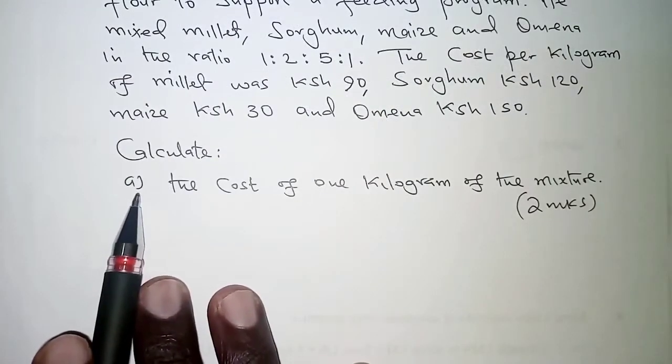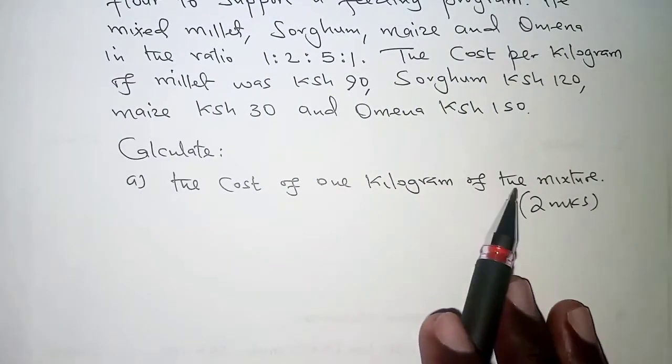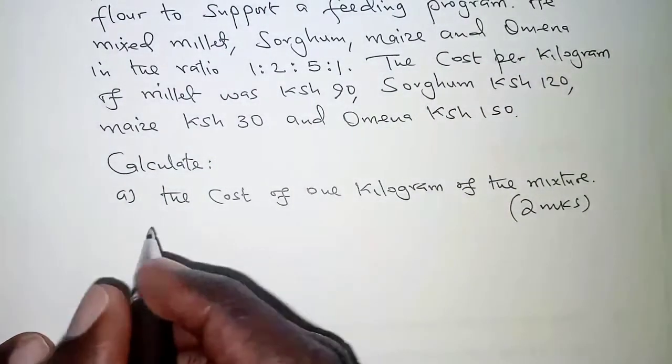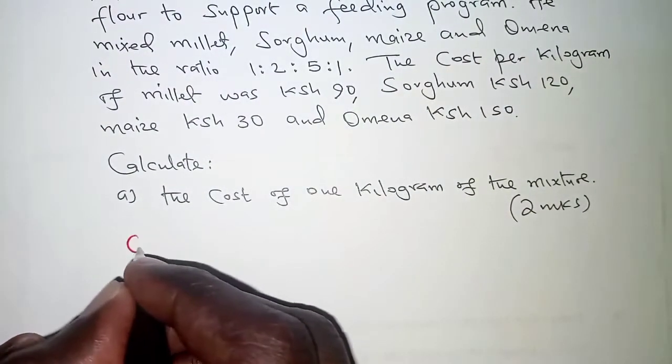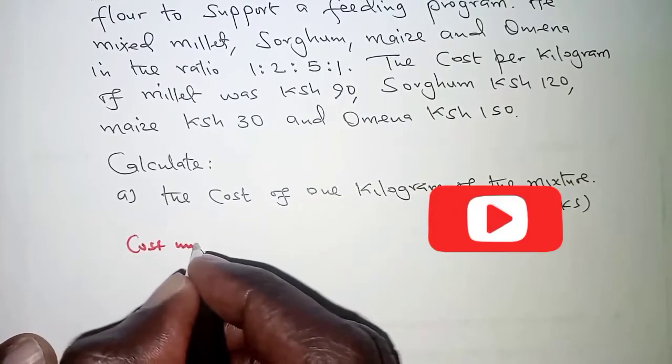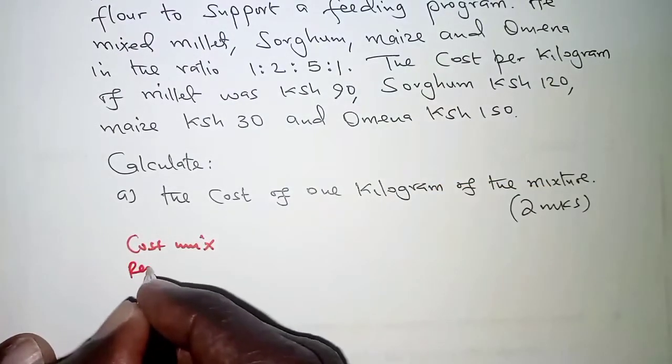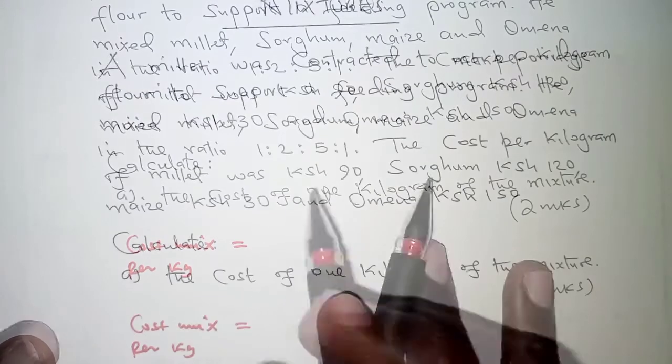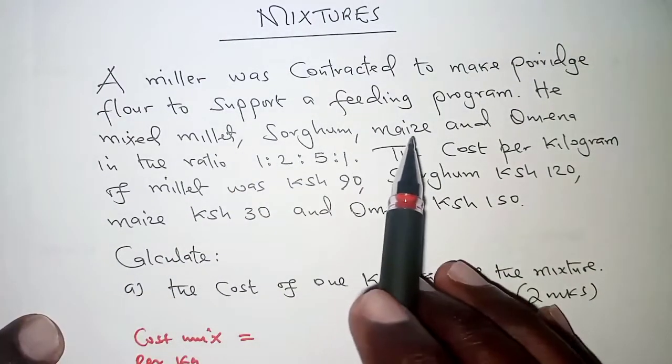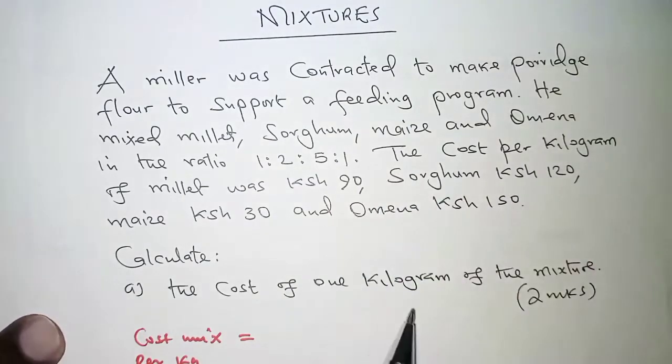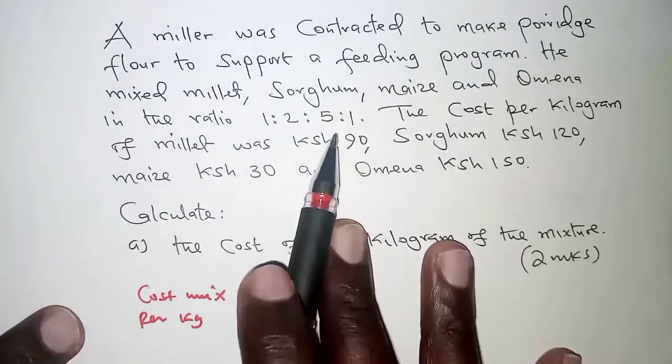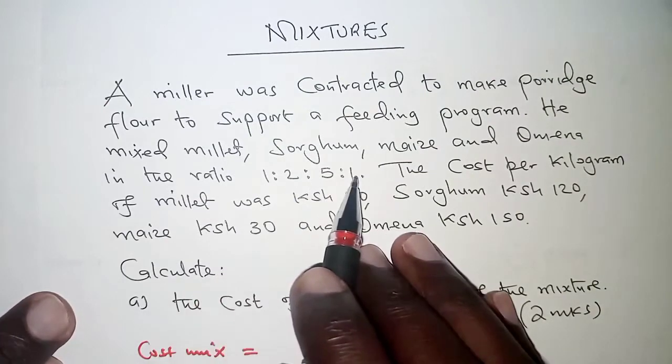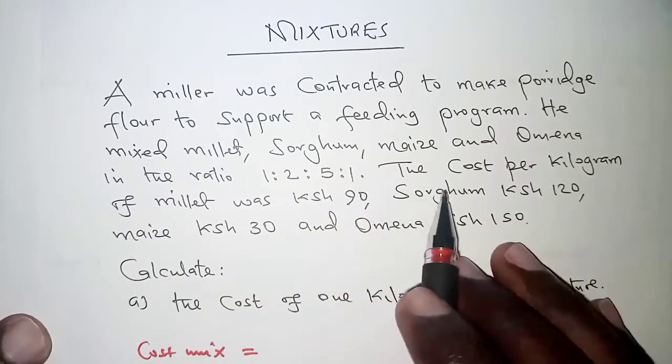Right, for part a, we are required to get the cost of 1 kilogram of the mixture. What we'll do here is, we say cost of mixture per kilogram will be obtained by having cost of sorghum, cost of maize, omena, and that of millet summed up. And just to note, the ratios here should represent the masses.